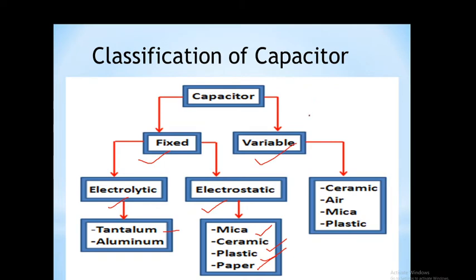For the variable capacitor, the value of capacitance can be changed. This capacitor is provided with a shaft or notch, and by moving the position of the shaft or notch, the capacitance can be varied. Depending on which type of dielectric material is filled between the conducting plates, the variable capacitor is also classified as ceramic capacitor, air capacitor, mica capacitor, and plastic capacitor.